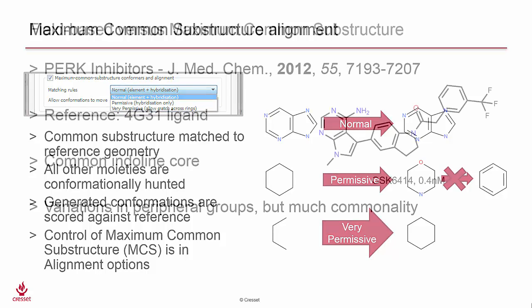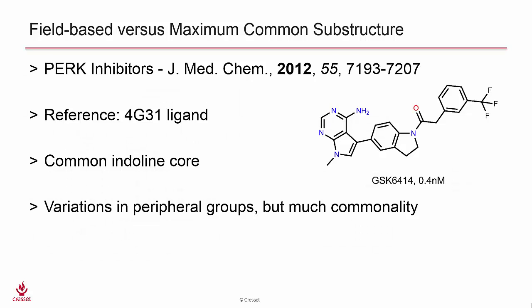To examine how an alignment is affected by the maximum common substructure options, we will look at a small set of PERK inhibitors that were published in 2012, which have a common indoline core. The peripheral groups have some variation, but also much commonality in their structures. Let's open this dataset in FORGE.